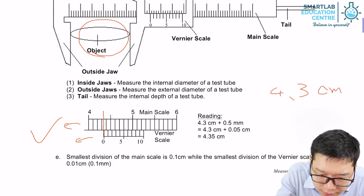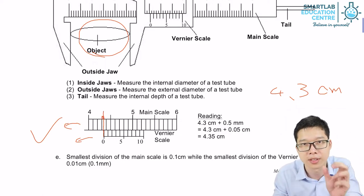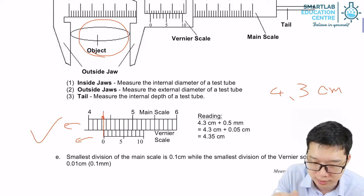But you can see there's a small gap here. How do we identify the length of this small gap? We need to use the vernier scale.